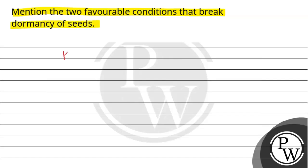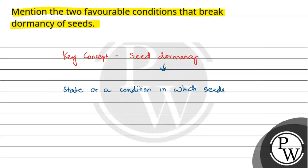So the key concept for this question is seed dormancy. Seed dormancy is basically defined as a state or a condition in which seeds are prevented from germinating even under favorable conditions.